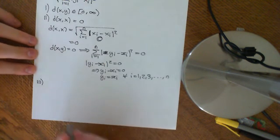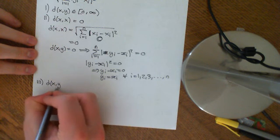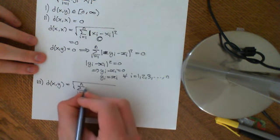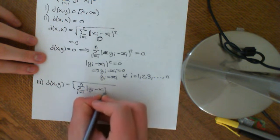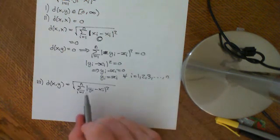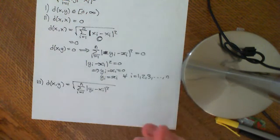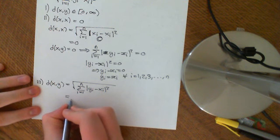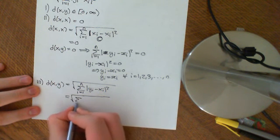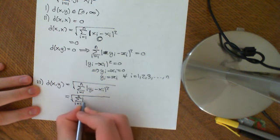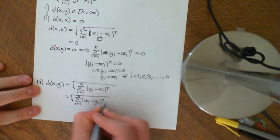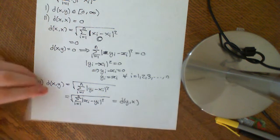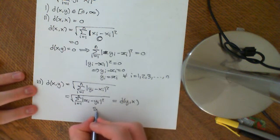The third property is symmetry: D(X, Y) = the square root of the sum from i = 1 to N of |Yi − Xi|². The modulus sign doesn't care whether we compute Yi − Xi or Xi − Yi — the modulus is the same. So this equals the square root of the sum of |Xi − Yi|², which equals D(Y, X).